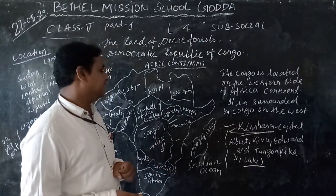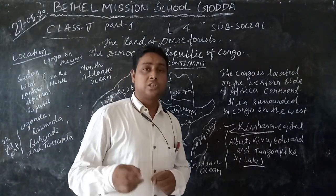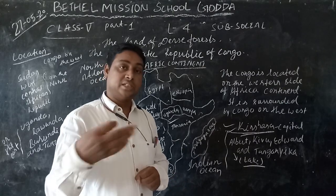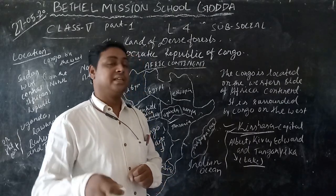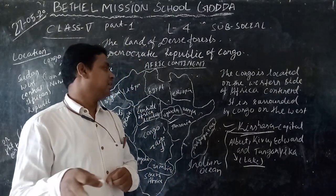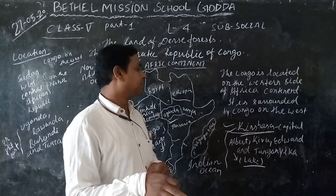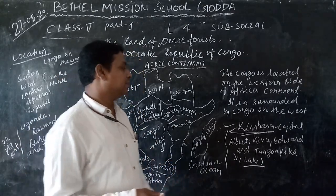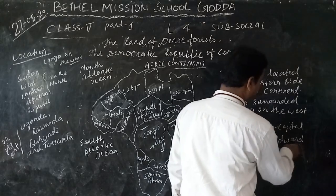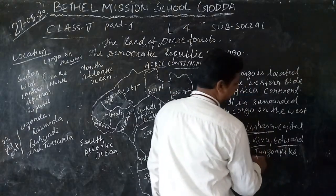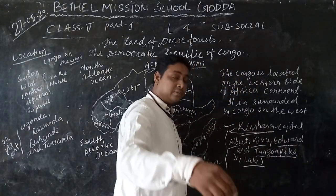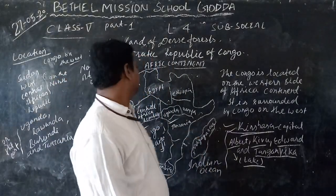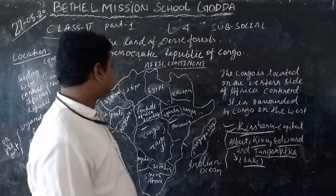The sources of the Zaire River come from four major lakes: Albert, Kivu, Edward, and Tanganyika. These are the four major lakes from which the Zaire River originates.